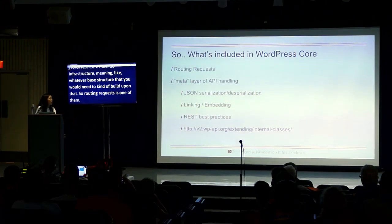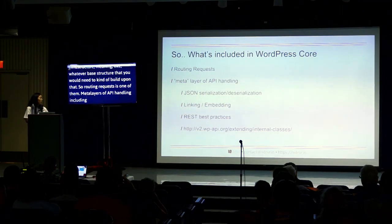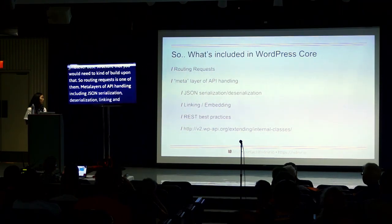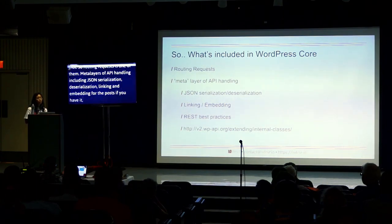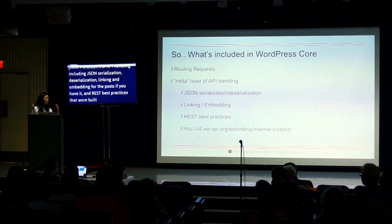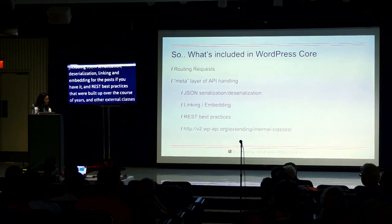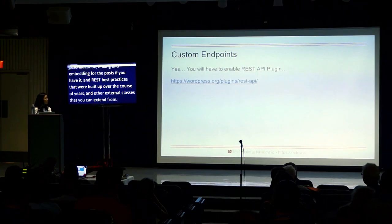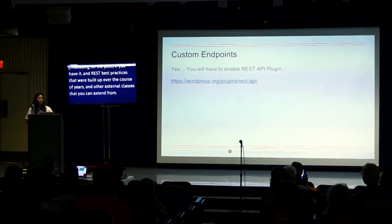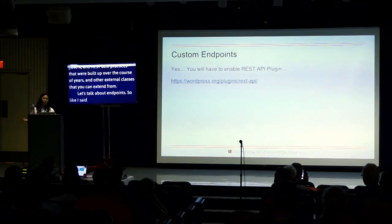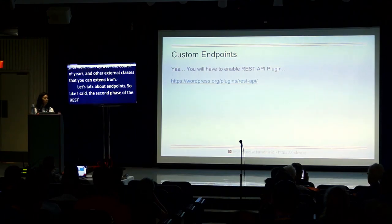So what's included in WordPress 4 now? The infrastructure includes things like routing requests, several layers of API, serialization and deserialization, linking and embedding for related posts, REST best practices built up over the course of years, and external classes you can extend from.